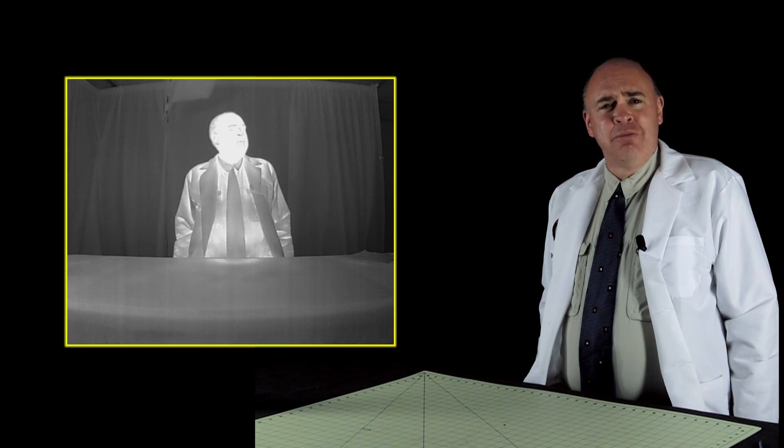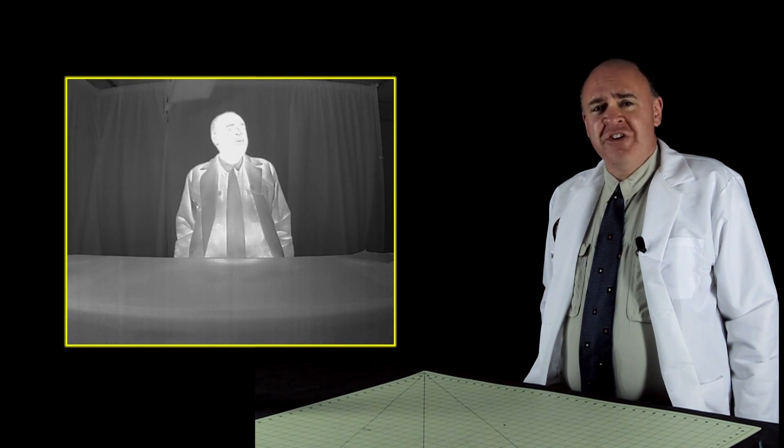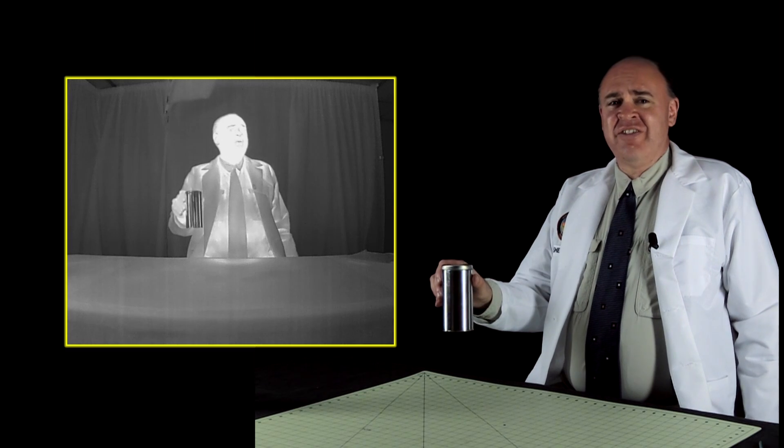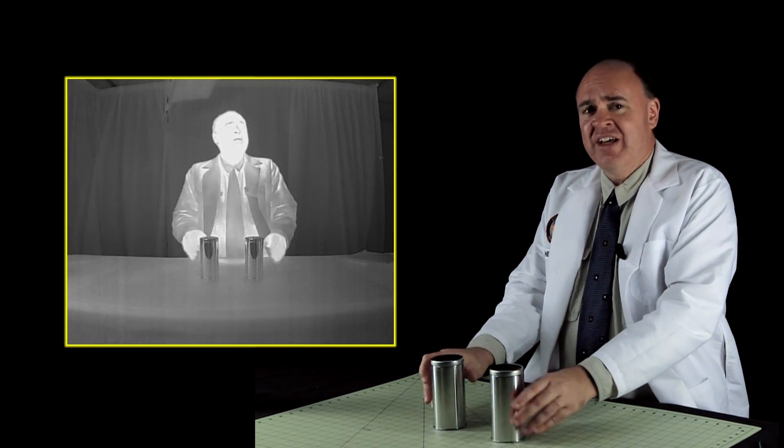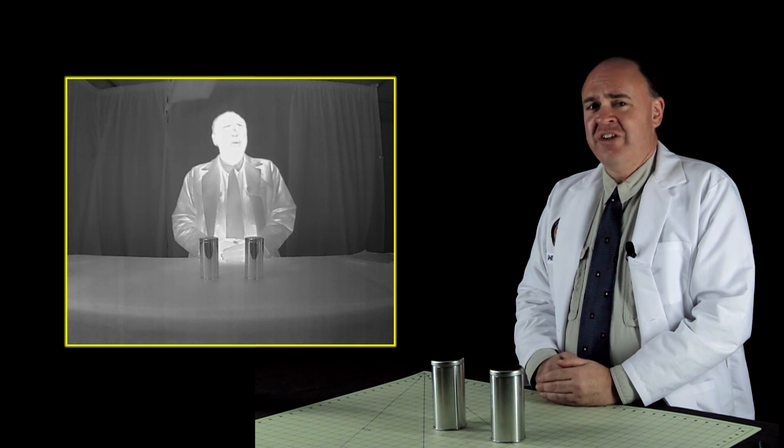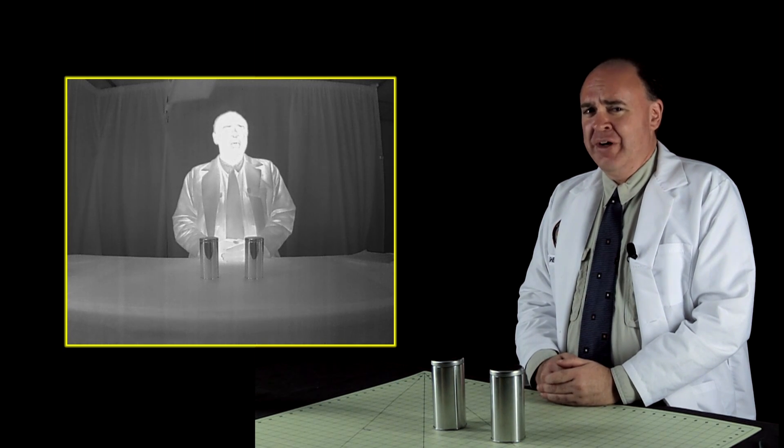You would think that if thermal imaging is good for anything, it would be revealing which of these metal canisters contains hot coffee, and which one contains ice water. But as you can see, they look the same on the thermal imaging camera. Just so we're clear, there's nothing tricky going on here.